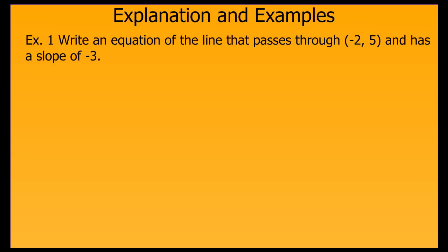Let's look at some examples. We want to write an equation for a line that passes through the point negative 2, 5, and has a slope of negative 3. First, let's write down the point-slope form of a linear equation: y minus y1 equals m times the quantity x minus x1. Now we'll fill in 5 for y1, negative 2 for x1, and negative 3 for m, our slope.